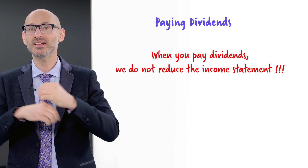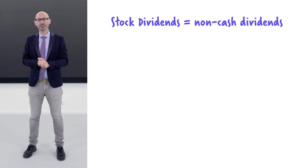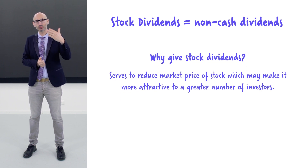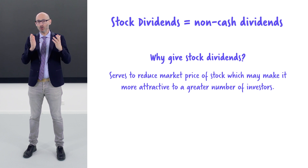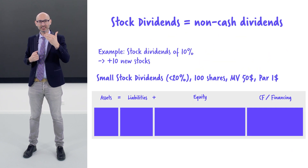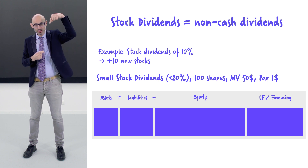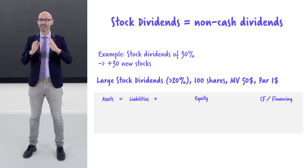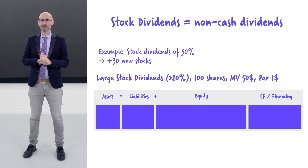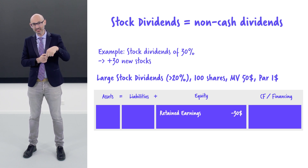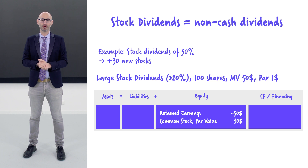We also have stock dividends — these are non-cash dividends, essentially more shares to owners. If you own 100 shares and they make a 10% dividend, now you'll have 110 shares. The accounting entry for a small stock dividend is to reduce retained earnings and increase common stock and paid-in capital. In the case of large stock dividends, which is more than 20% of the total float, you reduce retained earnings and increase the par value of common stock.